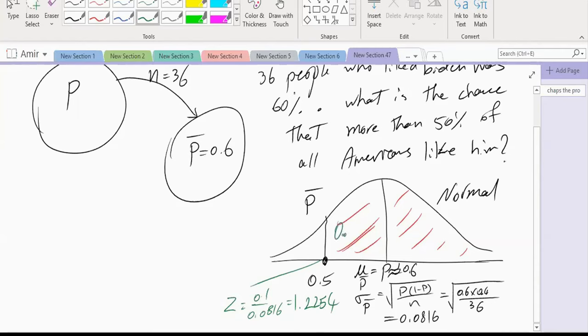This area is, z equal to 1.23, 0.3907. And this area is 0.5. So the chance that the proportion in the population is more than 0.5 is 0.8907.